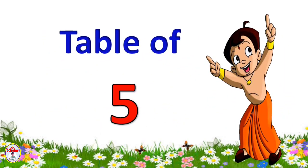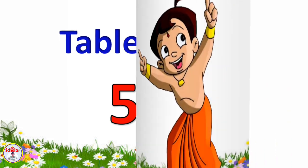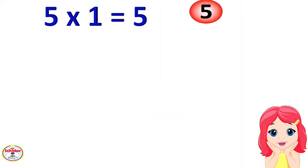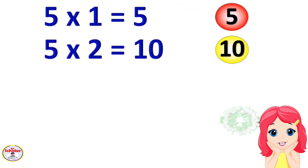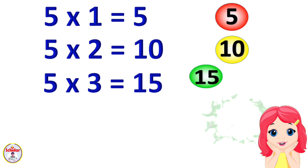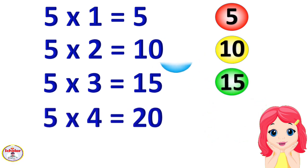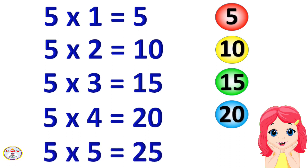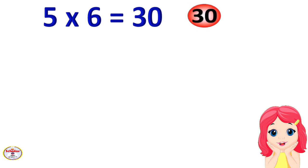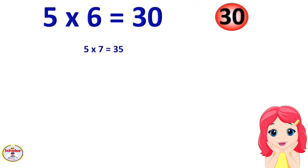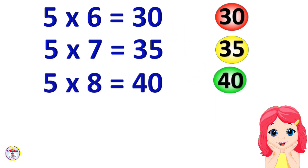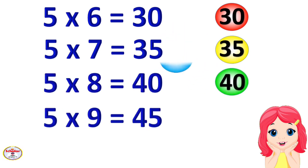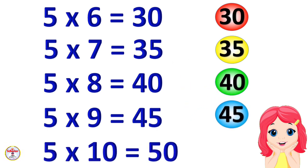Table of 5. 5×1=5, 5×2=10, 5×3=15, 5×4=20, 5×5=25, 5×6=30, 5×7=35, 5×8=40, 5×9=45, 5×10=50.